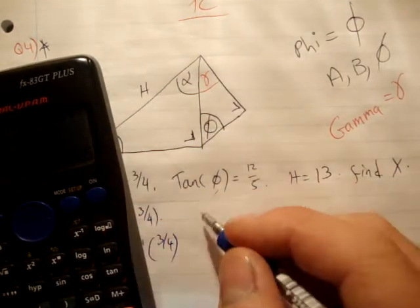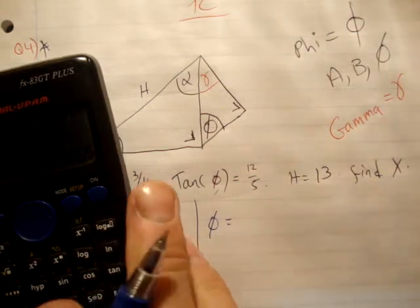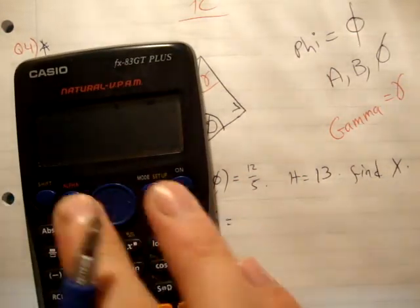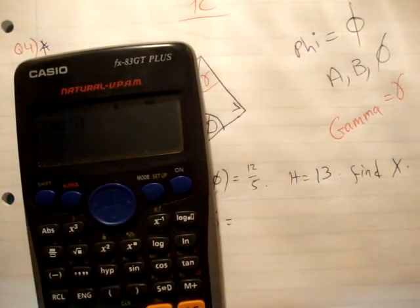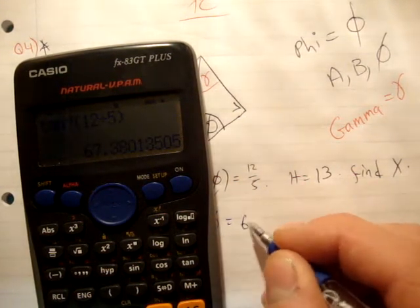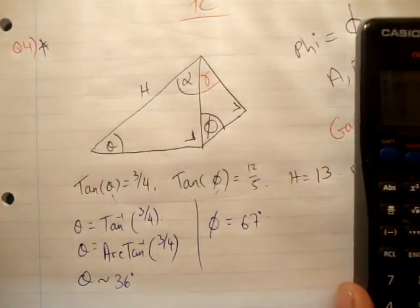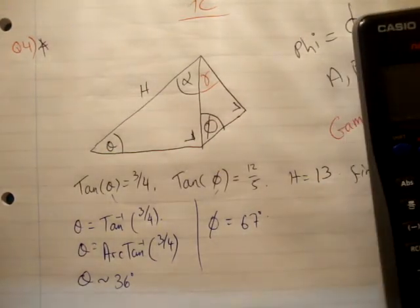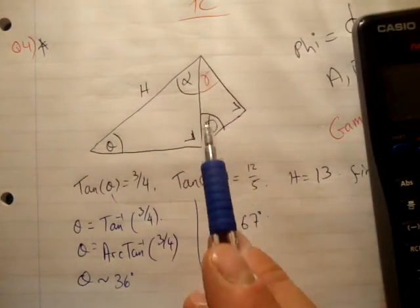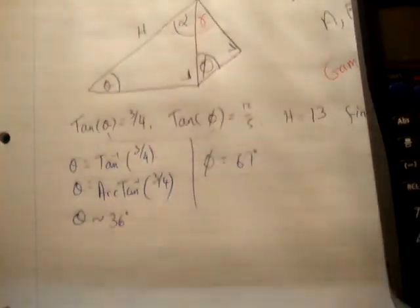Do the exact same thing for phi. So we'll say phi is equal to the inverse tan of 12/5. Shift tan, 12 divided by 5, gives an angle of approximately 67 degrees. Alright. So let's just look at this triangle here. First of all I'm going to redraw that just for clarity.